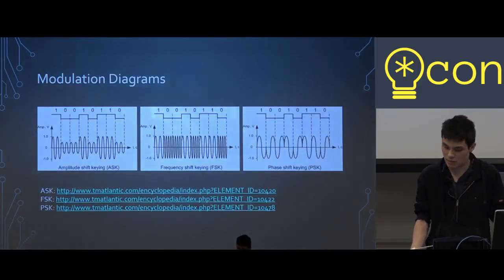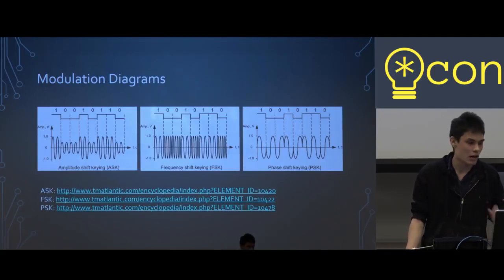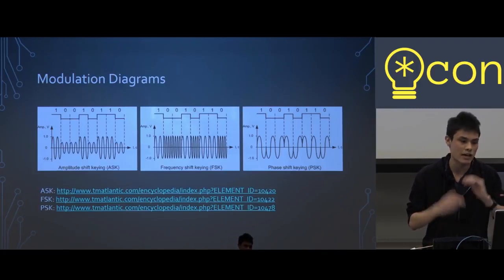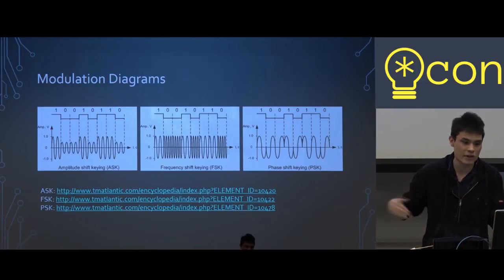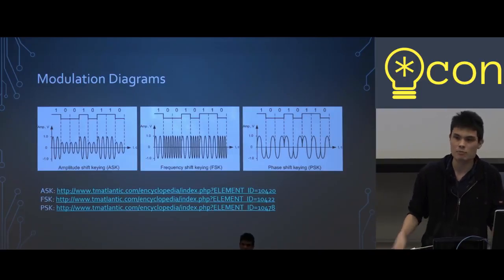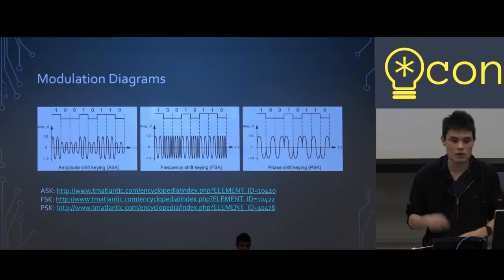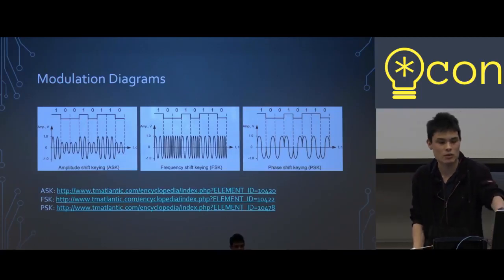Here are three diagrams of keying on a digital system, where we are sending a binary string. The leftmost is amplitude shift keying: when sending a one we send a higher amplitude carrier wave, and when sending a zero we send the regular carrier wave. In the middle is frequency shift keying — a similar idea but with frequency: when we send a one we send the carrier wave, and when we send zeros we send a higher frequency signal. The farthest right is phase shift keying, where we shift the phase of the wave whenever we go from a one to a zero, otherwise the phase stays the same.